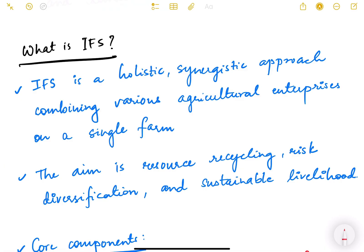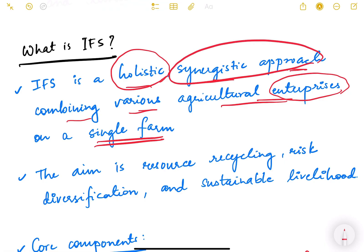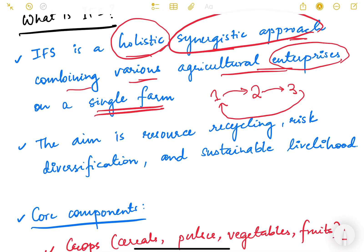IFS is a holistic synergistic approach combining various agricultural enterprises on a single farm. So basically you have multiple activities going on on a single farm. It combines various components into one place. Synergistic means one activity helps the second, second helps the third, third helps the first. So they are synergistically related. The aim is to have resource recycling, risk diversification, and sustainable livelihoods.